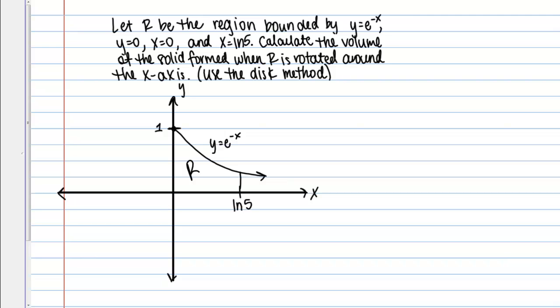Let's work through the following example together. Let R be the region bounded by Y equals E to the negative X, Y equals 0, X equals 0, and X equals natural log of 5. Calculate the volume of the solid formed when R is rotated around the X axis. We want to use the disc method to actually do this.